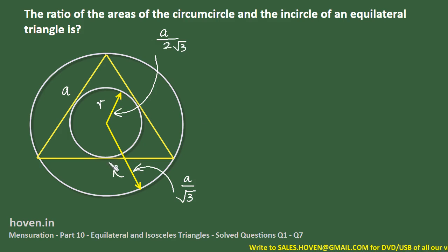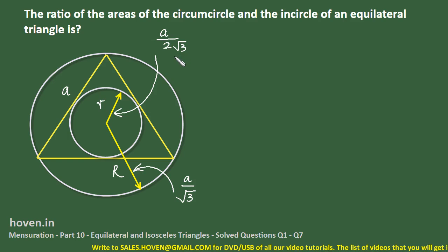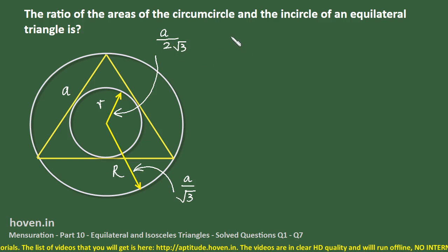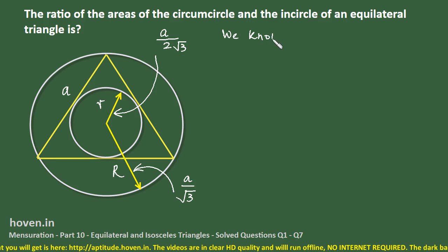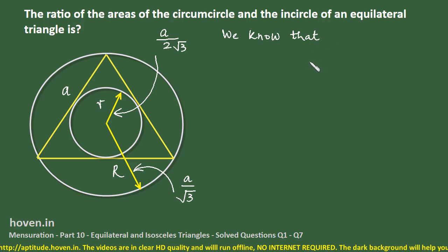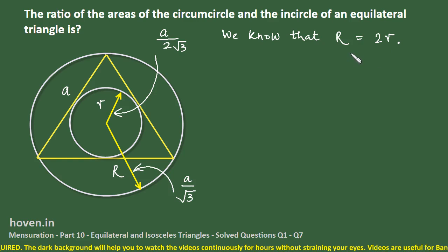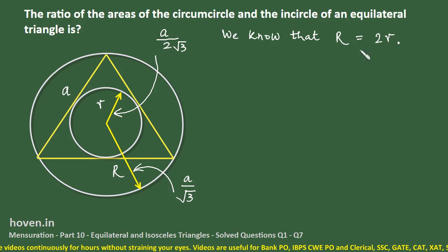The incircle is the circle contained inside the equilateral triangle with radius r = a/(2√3). Notice that r is half of R, since R = a/√3, and dividing by 2 gives r. Therefore R = 2r. This is a very important result — always handy in questions involving the incircle and circumcircle of an equilateral triangle.